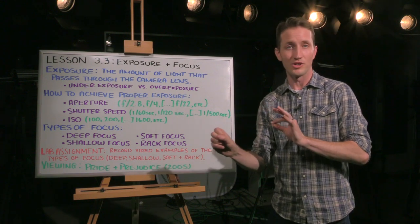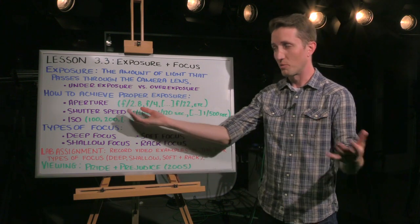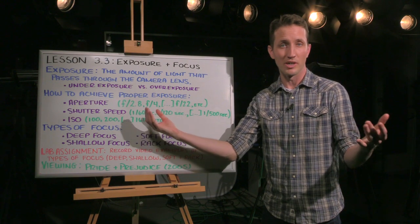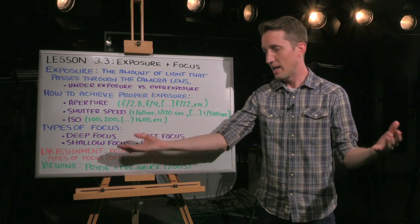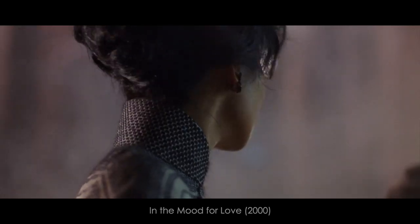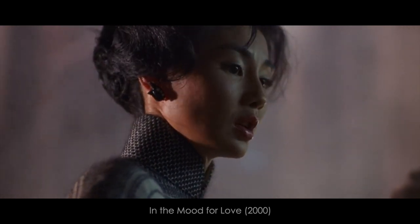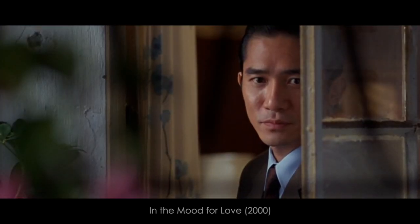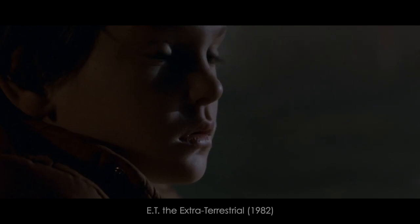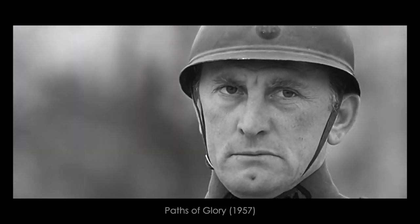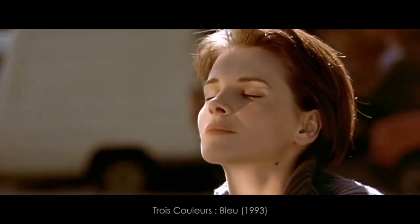Now, if you want shallow focus, then you're going to want a low f-stop. You're going to want to open that aperture. And with shallow focus, only part of the image is in focus. Maybe you have your subject in the foreground, and they're in focus, and the background is completely blurred out. That is what we would call shallow focus.